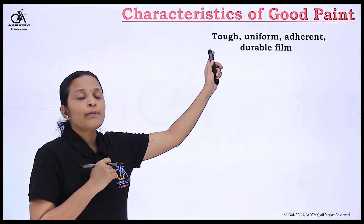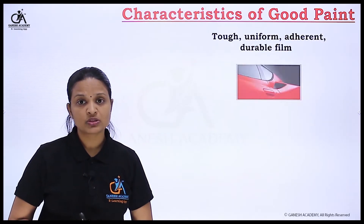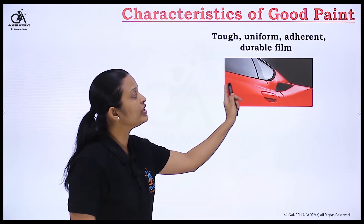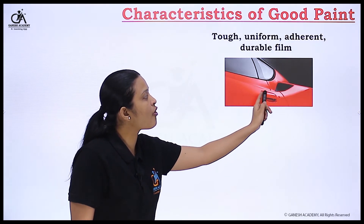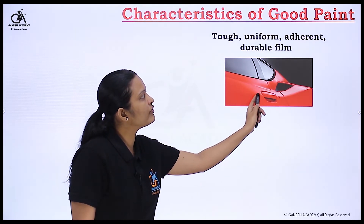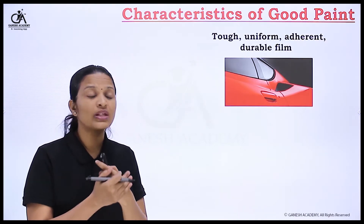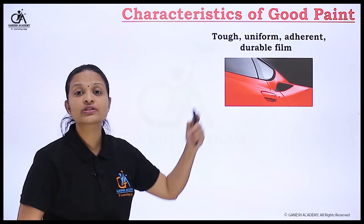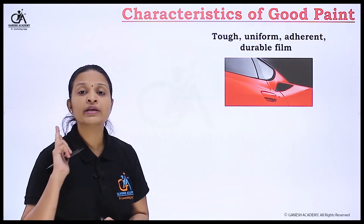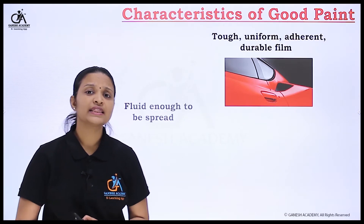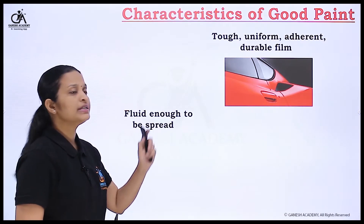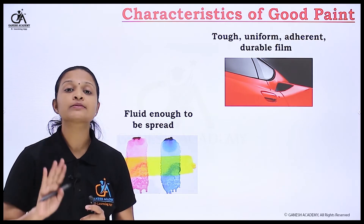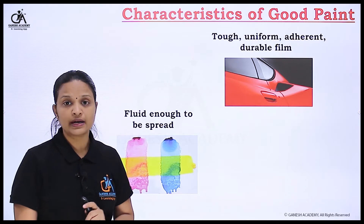The painted film should be tough — this is one of the characteristics of good paint. It should be tough, uniform, adherent, and durable. The next characteristic is that it should be fluid enough to be sprayed. When we apply paint on any article or wall, it should spray properly — fluid enough to be sprayed.